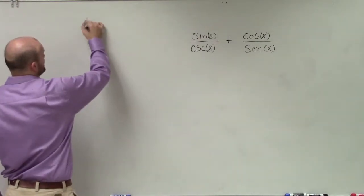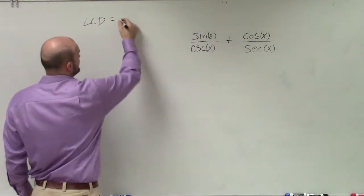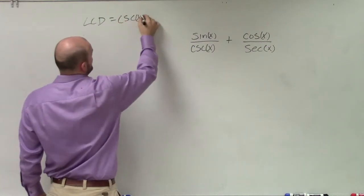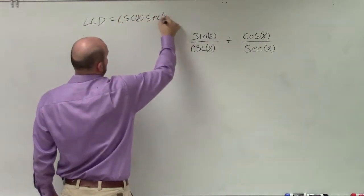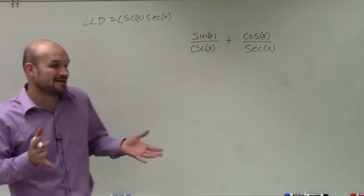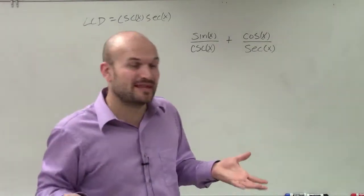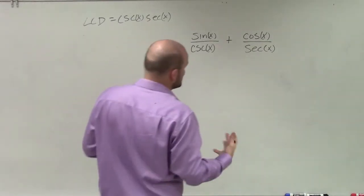Therefore, we'd have to multiply the top and bottom by both of these to make sure we get a common denominator of cosecant times secant of x. Now, by doing that, you'll actually be able to get something that is not going to be that bad, at least algebraically.